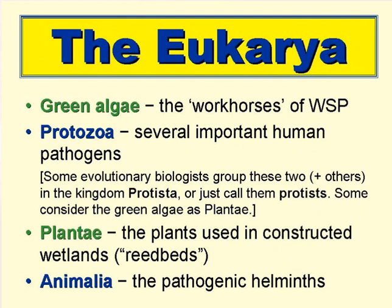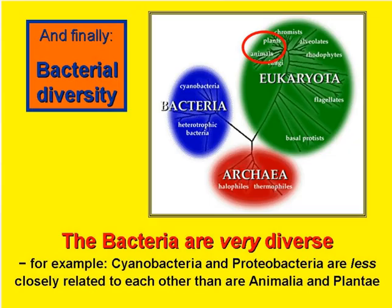The third domain, the Eukarya, has some members that are important in wastewater treatment — for example, the green algae, which are the workhorses of waste stabilisation ponds. Some protozoa are serious human pathogens, and some non-pathogenic groups are important in activated sludge. In the Plantae, there are the various plants grown in constructed wetlands, generally reeds and rushes. And in the Animalia, there are the pathogenic helminths, which cause a range of chronic infections in poor communities in developing countries.